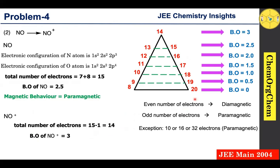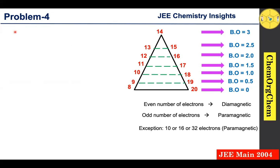Since 14 is an even number, NO⁺ is diamagnetic. So the bond order has increased (2.5 → 3.0) and the magnetic behavior has changed (paramagnetic → diamagnetic). This satisfies the question. Option 2 appears to be the correct answer, but let's verify the remaining options.